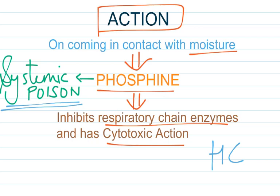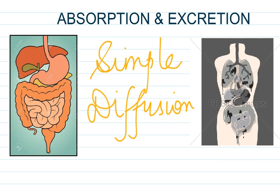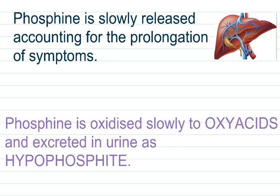Absorption and excretion: Phosphine is rapidly absorbed from the GI tract by simple diffusion and causes damage to the internal organs. After ingestion, some Aluminium Phosphate is also absorbed and metabolized in the liver, where Phosphine is slowly released, accounting for the prolongation of symptoms.